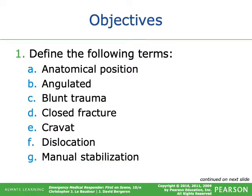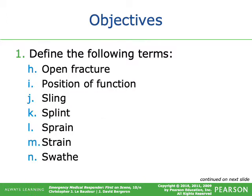Objectives: define the following terms — anatomical position, angulated, blunt trauma, closed fracture, cravat, dislocation, manual stabilization, open fracture, position of function, sling, splint, sprain, strain, and swath.